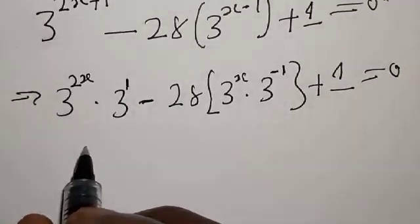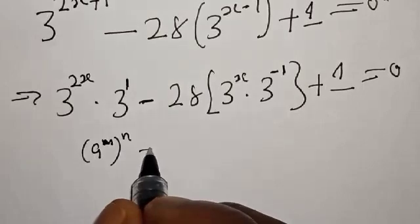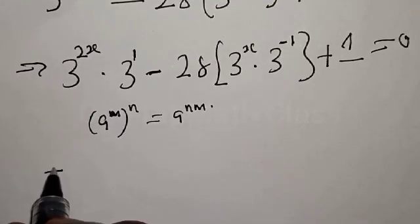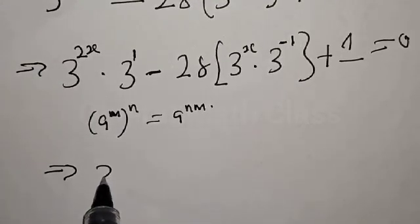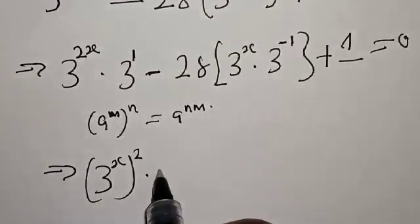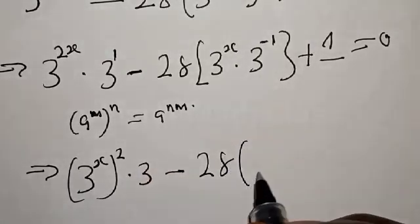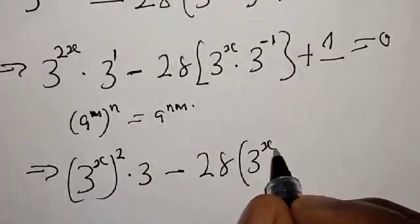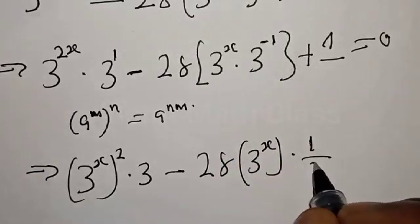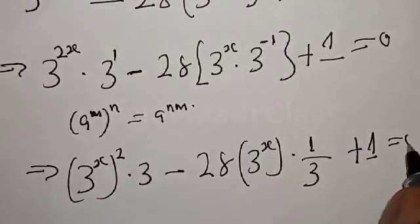Remember: a raised to power m raised to power n is equal to a raised to power n times m. This implies that we have 3 raised to power x squared, multiplied by 3 raised to power 1, which is 3, minus 28 into 3 raised to power x multiplied by 3 raised to power minus 1, which is 1 over 3, plus 1 equals 0.